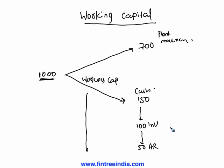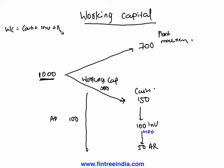Now let us say you meet a new vendor and he decides to give you inventory worth 100 on credit. So your inventory increased but your cash is not increasing. Can we say working capital is now 400? No — because we invested only 300. Even though your current assets are worth 400, some part of those current assets are not funded by you; they are funded by your accounts payable. So working capital is calculated as cash plus inventory plus accounts receivable minus accounts payable, because when they give you inventory on credit it increases current assets but that was not your own investment.